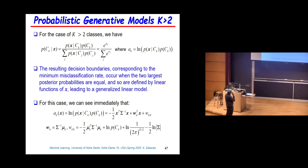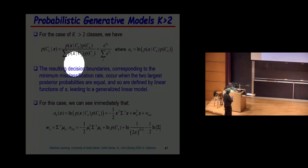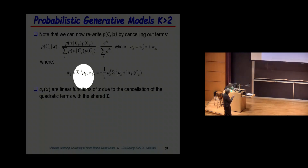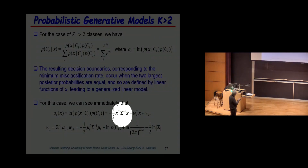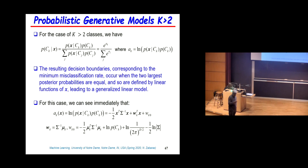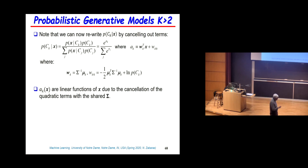The same thing happens with many classes. When I introduce alpha_k it has a quadratic term, but that quadratic term shows up in both the numerator and denominator, so it cancels out. So I redefine alpha_k to keep only the linear terms. You get the softmax function where alpha_k equals w_k-transpose x plus some bias, and you can do multi-class classification.